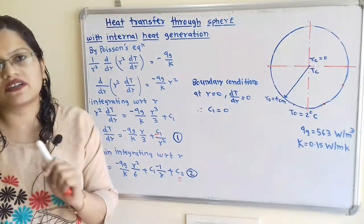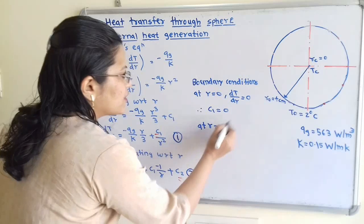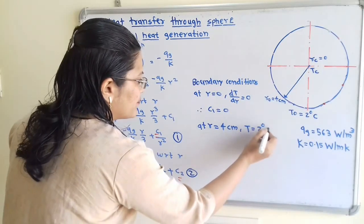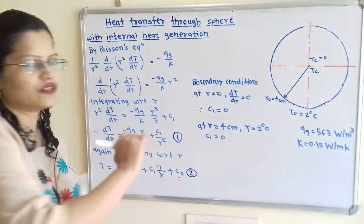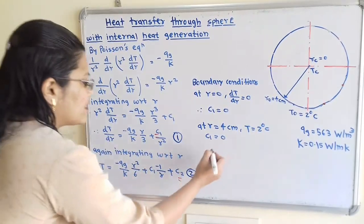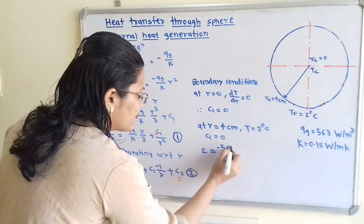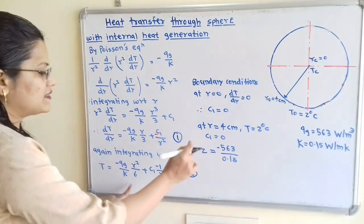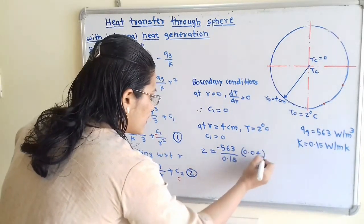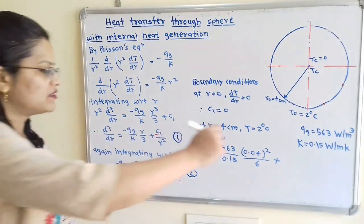For the second boundary condition: at R = RO = 4 cm = 0.04 m, T = 2°C. With C1 = 0, substituting into equation 2: 2 = −(563/0.15) · (0.04²/6) + C2. Solving, the first term gives approximately −1.0, so C2 = 2 + 1.0008 ≈ 3.0008.